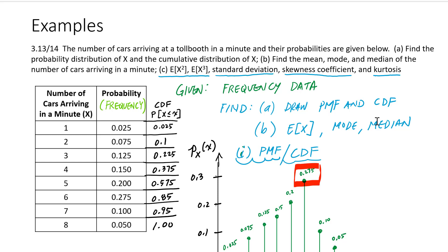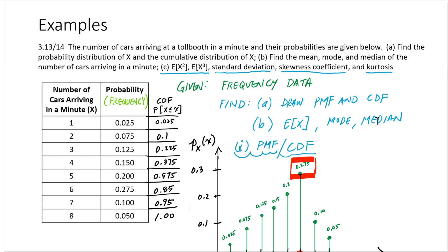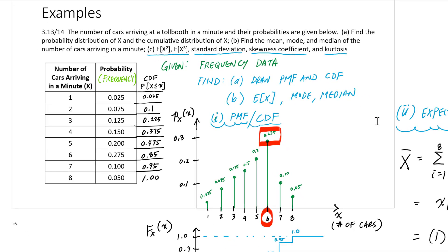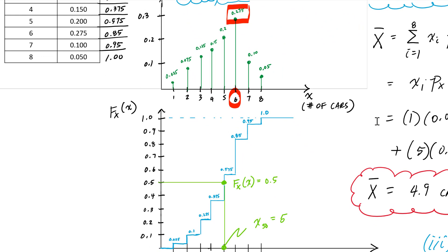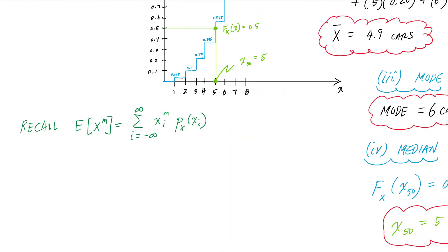Is it stretched out to the right, stretched out to the left, and the kurtosis gives us a measure of the peak or flatness of the distribution or the data. And so we're going to be able to use these numbers to describe what the random variable or this PMF looks like.